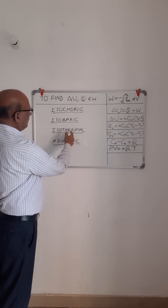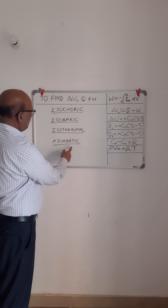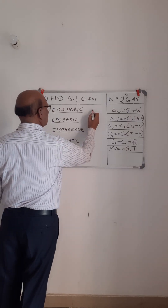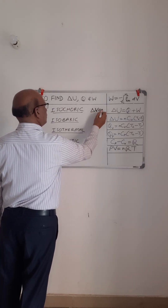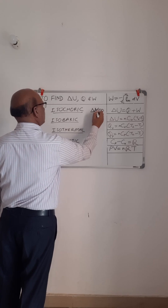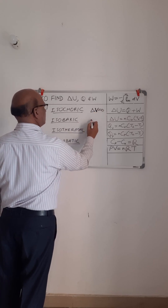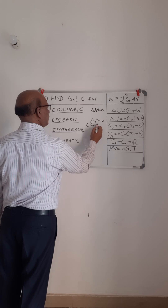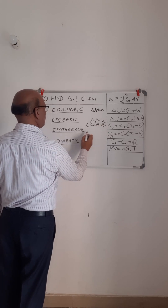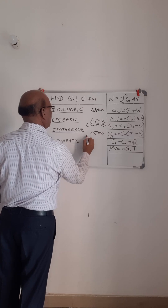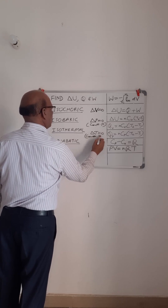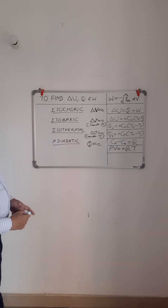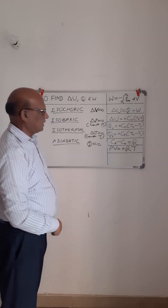An isothermal process is a constant temperature process, and an adiabatic process is one where there is no heat exchange between the system and surroundings. So: for isochoric, delta V equals zero; for isobaric, delta P equals zero; for isothermal, delta T equals zero; and for adiabatic, heat exchange between system and surroundings is zero.